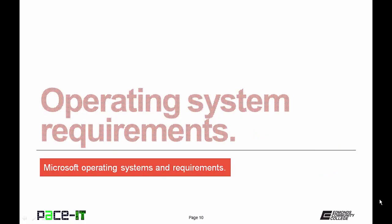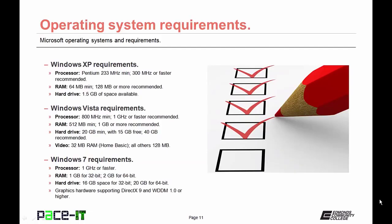Now let's discuss system requirements. The requirements for Windows XP were fairly minimal by today's standards. For the processor, the minimum was 233 megahertz, with Microsoft recommending 300 megahertz or faster. RAM requirements required at least 64 megabytes minimum, with Microsoft recommending 128 megabytes or more. The hard drive requirements were fairly minimal — you only needed 1.5 gigabytes of space, though back in 2001 that was actually a fair amount.